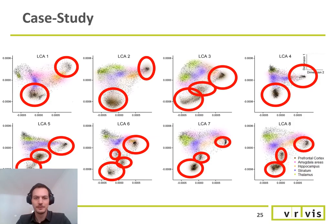For example, the thalamus in green at LCA2 and LCA3, or the striatum at LCA3, 4 and 5.